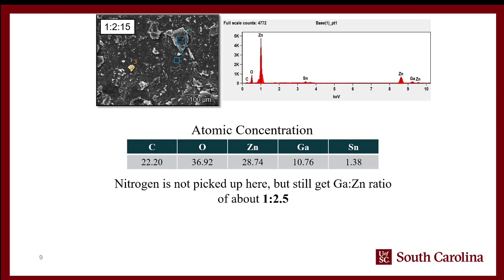We first did energy dispersive X-ray spectroscopy, which tells us which elements are present and roughly how much. There is some carbon detected — things like CO2 adsorb to the surface in pretty much every sample. But importantly, we see both zinc and gallium, which is what we were looking for. This confirms both elements are present. For the 1:2:15 gallium-to-zinc-to-urea ratio, we get a gallium-to-zinc ratio of about 1:2.5 in the product, which is close to what we expect within the margin of error for EDX spectroscopy.